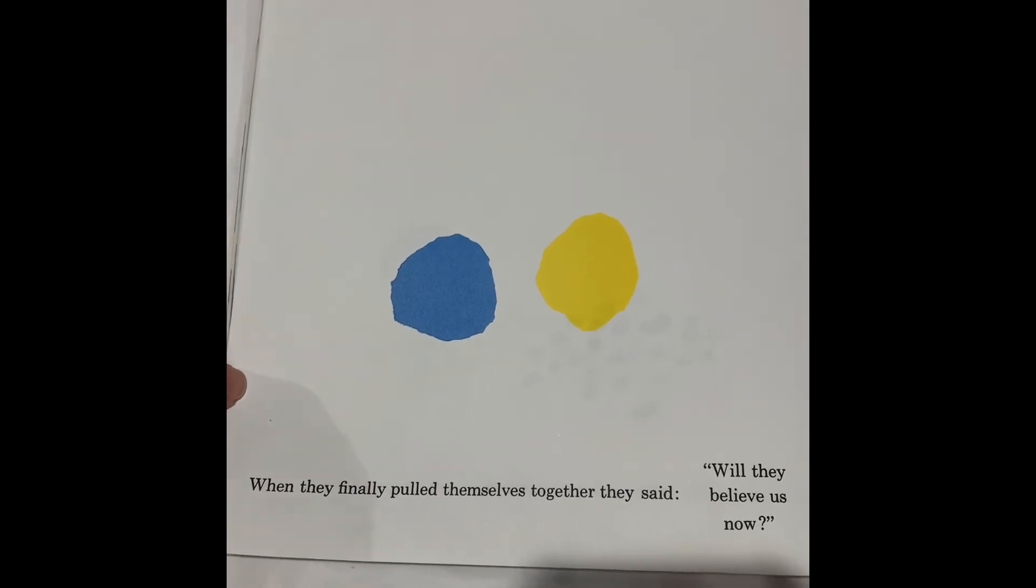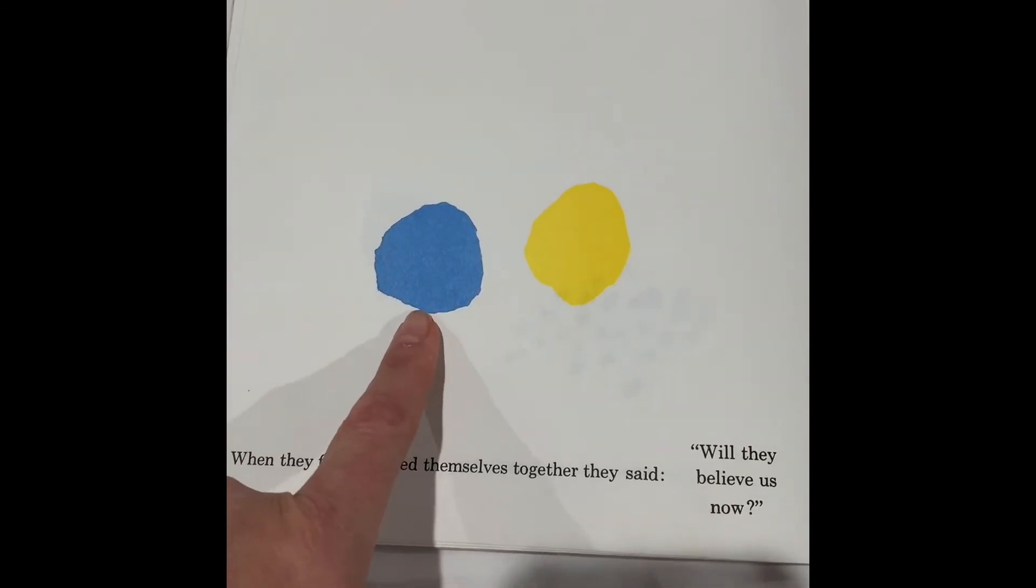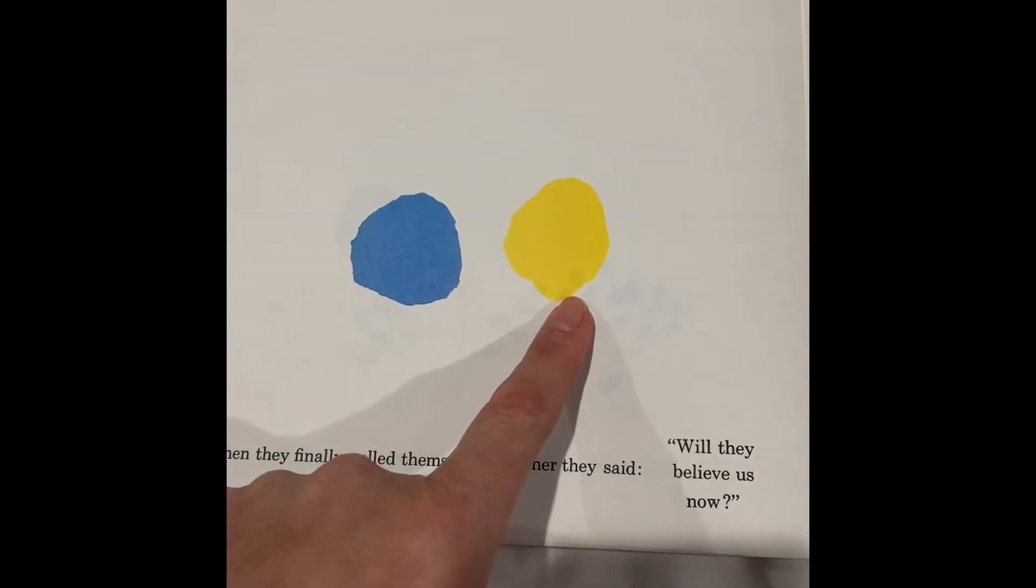When they finally pulled themselves together, they said, will they believe us now? What do you see here? I see blue. That's right. And yellow.